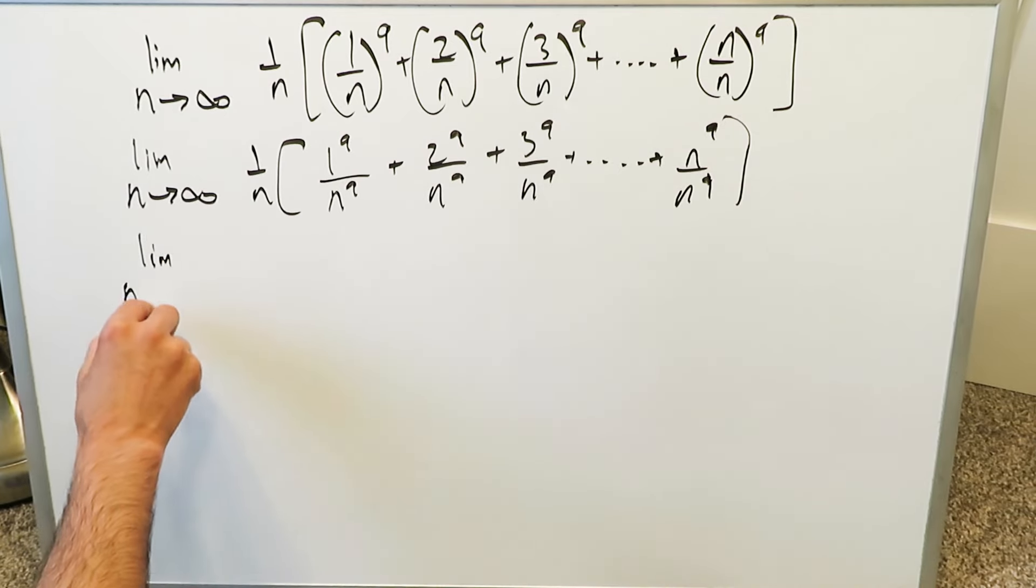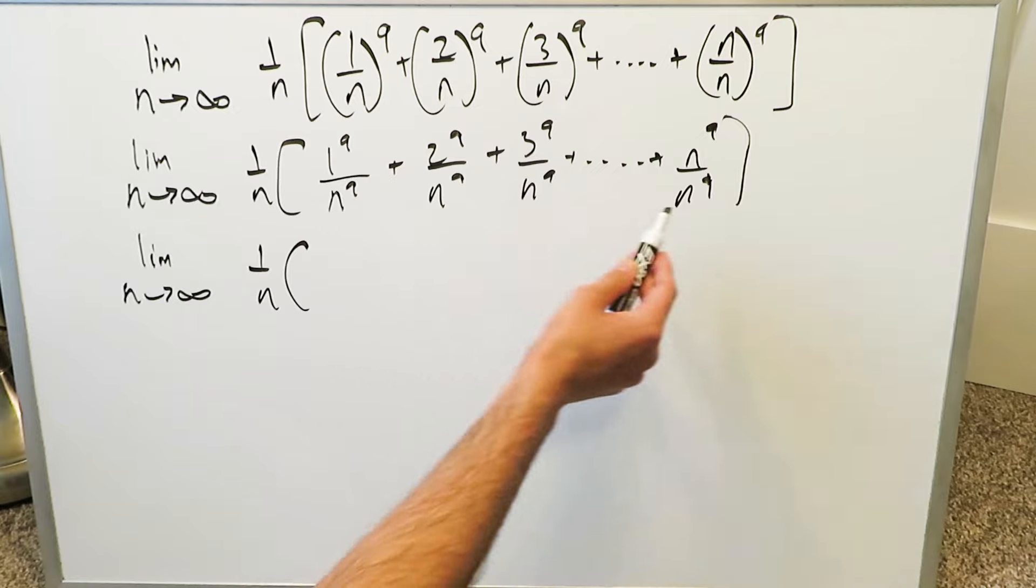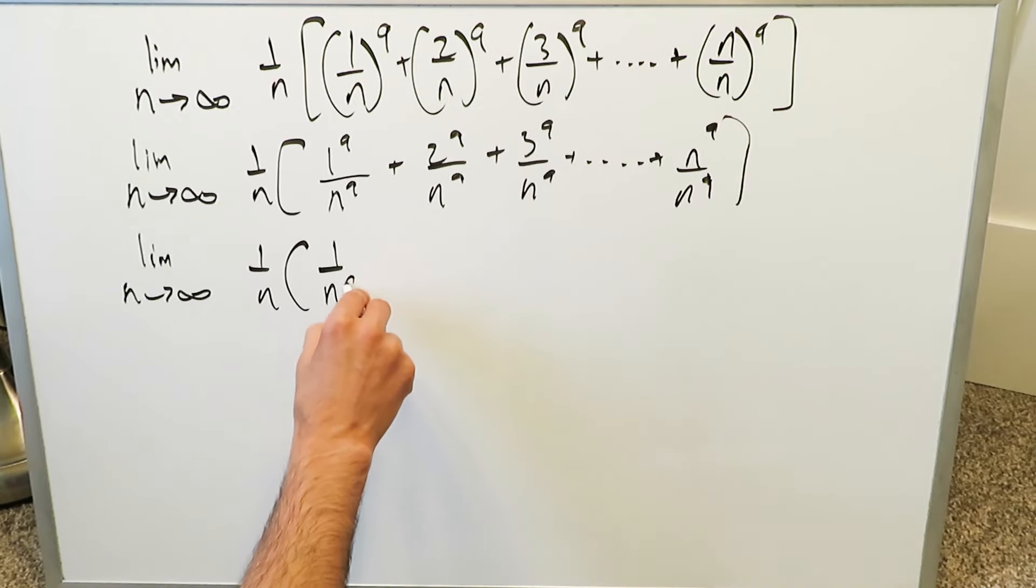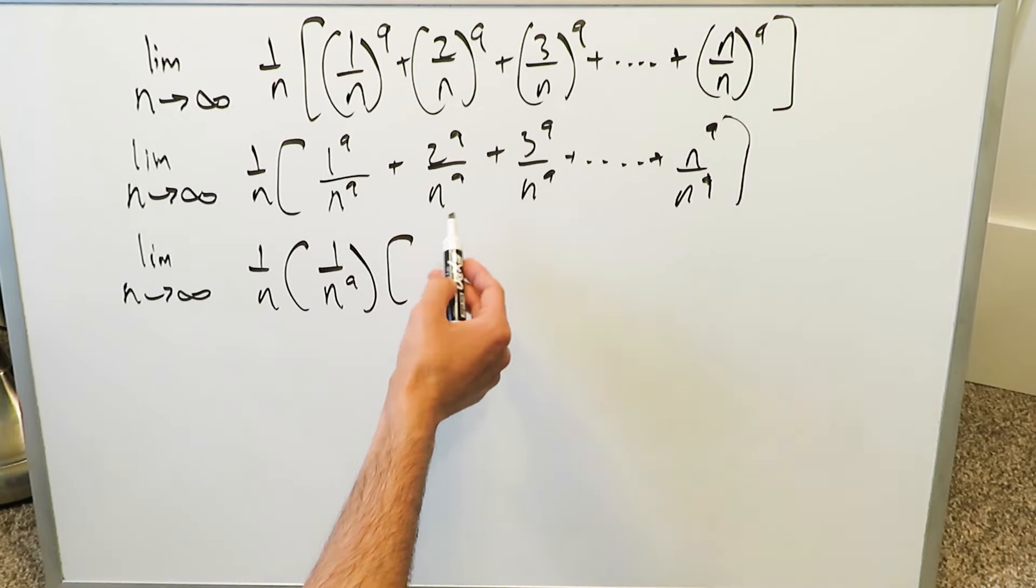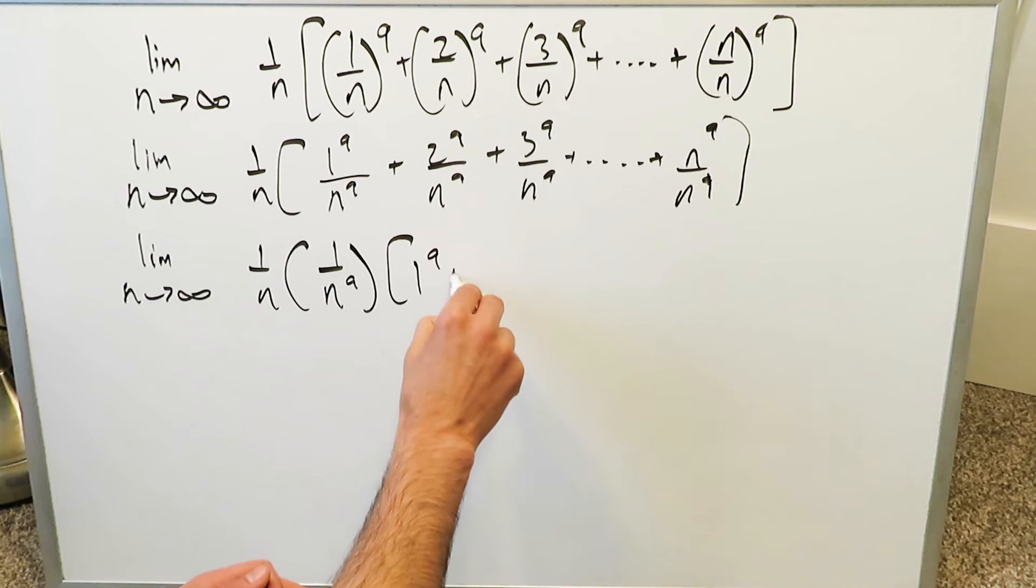We have limit as n approaches infinity. We have 1 over n. I'm isolating here 1 over n to the 9, and then in the parentheses now I have just these items here.